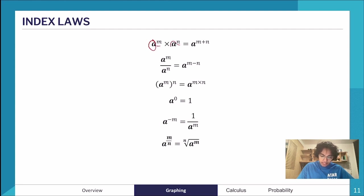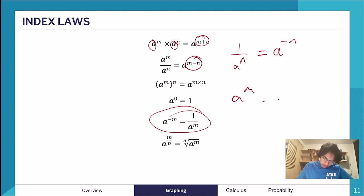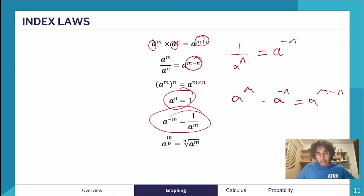When you have two indices of the same base but different powers multiplying together, you just add their powers. If you're dividing them, you subtract their powers. Also important: 1 over a^n can be represented as a to the power of negative n. Something critical to remember is that a to the power of 0 equals 1 — not 0. This is a common mistake, and VCAA likes to test students on it.